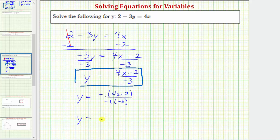If we did this, we would have y equals, in the numerator, we would have negative 4x plus 2, and the denominator would be negative 1 times negative 3, which is positive 3. So we can also express y in this form.